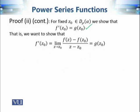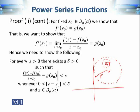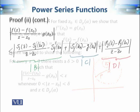We want to prove that the derivative of f at z₀, for any z₀ in the domain, equals g(z₀). By the definition of the derivative we want to show this limit equals g(z₀), and using the epsilon-delta definition we want to show that for an arbitrary ε > 0 there exists a δ (depending on ε) such that the expression is less than ε whenever |z − z₀| < δ, with z remaining in the disk of convergence.